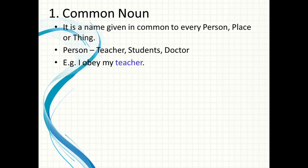Jab hum kisi bhi person, place ya thing ko ek common name dete hain, uska koi particular name nahi dete, then that name is known as common noun. For example, teacher is a common name given to a person; student is also a common name; doctor is also a common name given to a professional.